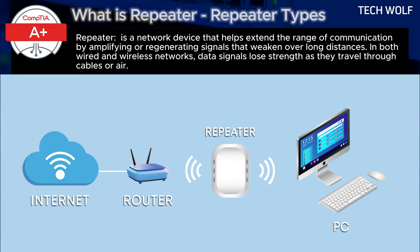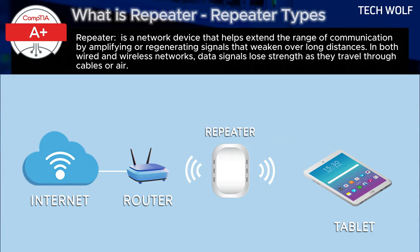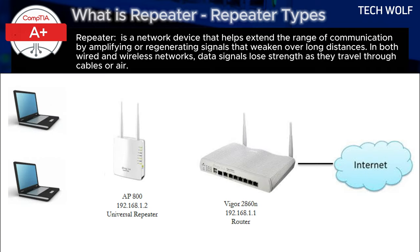Repeaters simply boost the signal. At signal regeneration, repeaters regenerate the data without altering or interpreting it, ensuring that both wired and wireless signals maintain quality over greater distances. Repeaters also work in both directions, boosting incoming and outgoing signals to maintain communication flow.